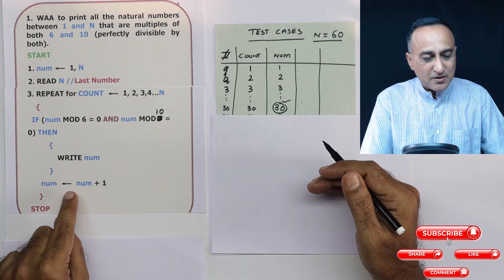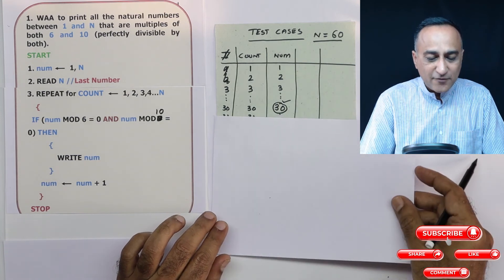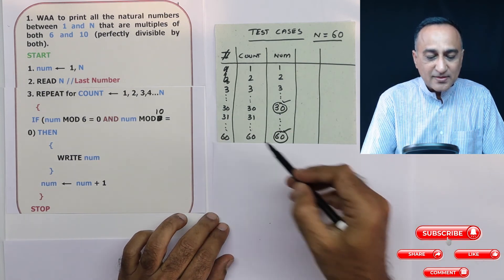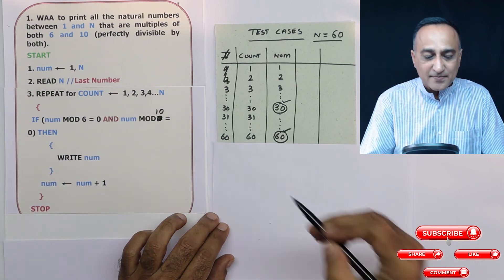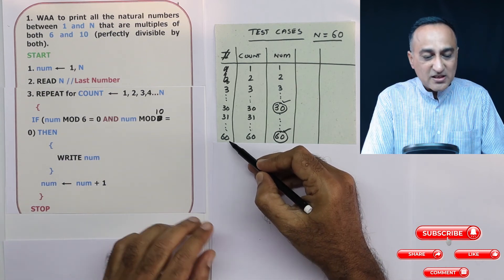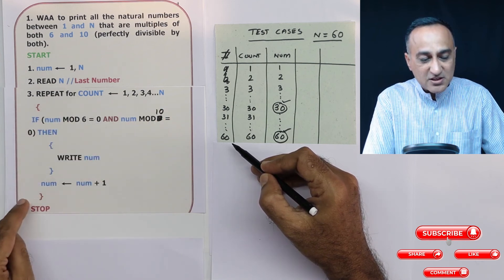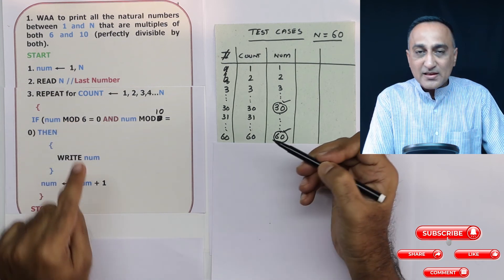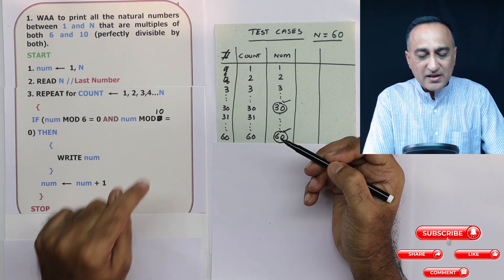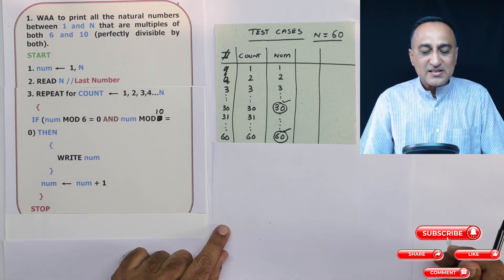Then what I do is I make number by one, number becomes 31. Now again, from 31 to 60, there is no number which is divisible by both 6 and 10. But when number becomes 60, which is my last point, when count is executing for the 60th time, number is also 60. So 60 mod 6 is zero, 60 mod 10 is also zero. So I'm going to also print 60 on the screen.